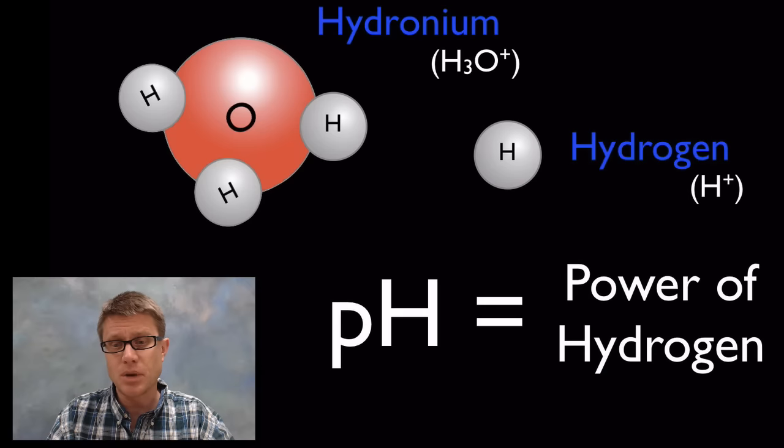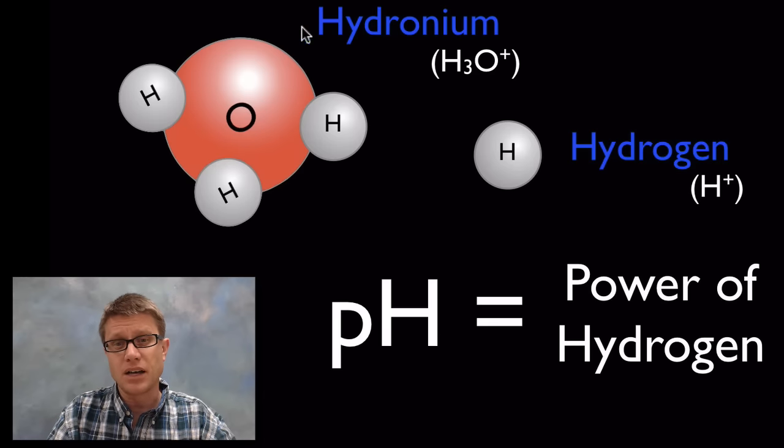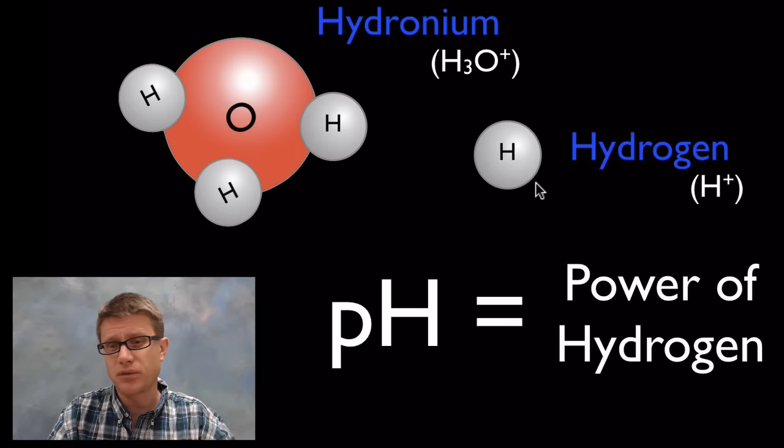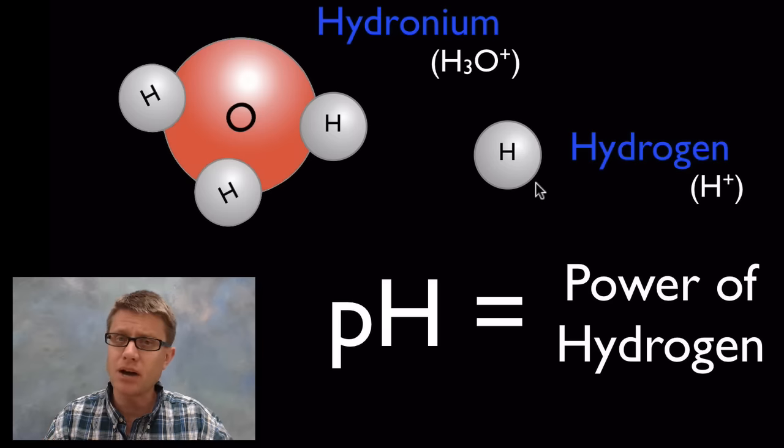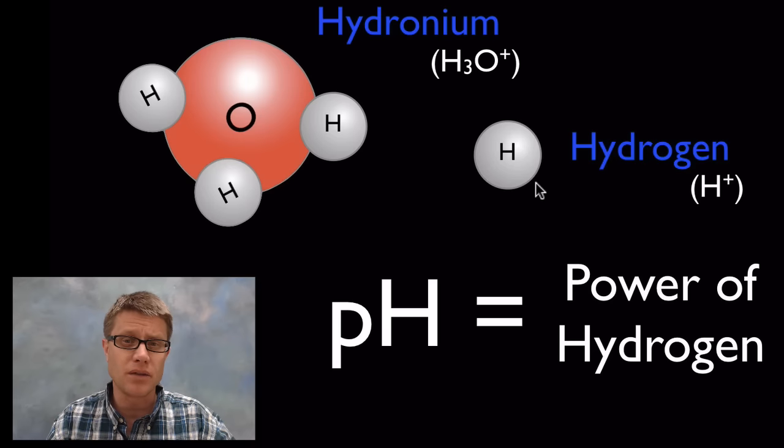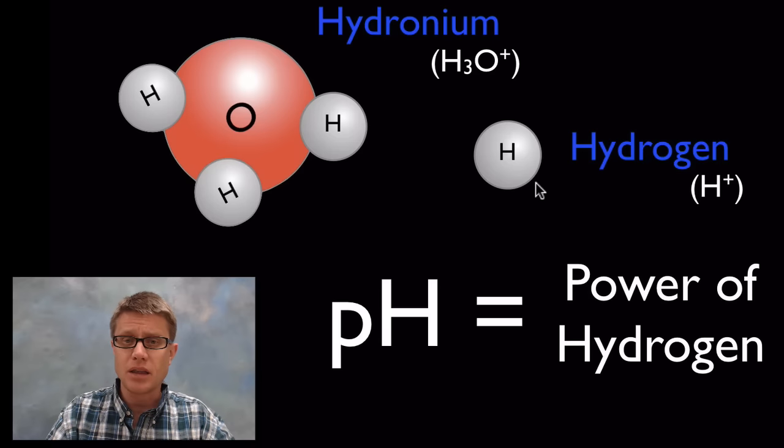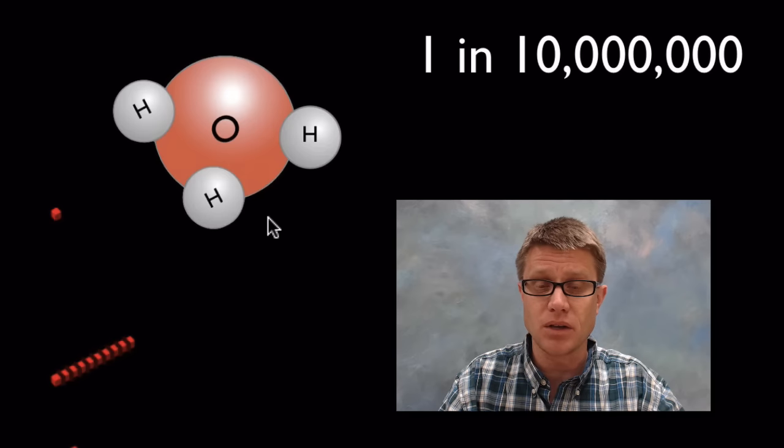And so what is pH a measure of? Well the P stands we think for the power of hydrogen. In other words the amount of hydrogen. But it could also be the amount of hydronium or the amount of just free hydrogen ion inside the water. And so if we look at the power of that or almost the percentage of that, that's going to be what pH measures. And in regular water, distilled water, the amount of this occurring is really rare. In other words it's a 1 in 10 million chance that we're going to have hydronium.